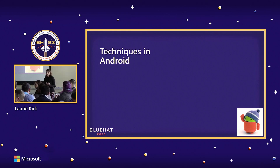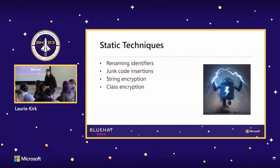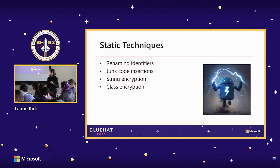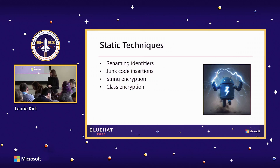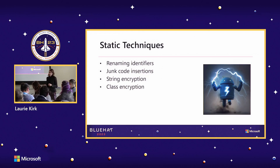Now let's go into the actual techniques employed to perform obfuscation. First, we have basic static techniques visible on disk when you decompile the application. One is renaming identifiers — not just for optimization, but to rename variables to misleading or junk names to obscure analysis. Another technique is junk code insertion: adding a lot of additional code so the reverse engineer can't locate the actual running code. Due to the asynchronous nature of Android applications, this is particularly effective. Finally, they might perform string or class encryption so that sensitive data or malicious code is encrypted on disk, forcing the reverse engineer to use dynamic analysis techniques.